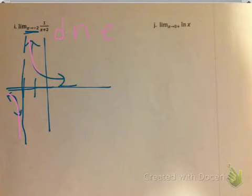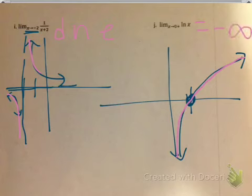Next: natural log of x again, but looking at the limit as x approaches 0 from the right. From the right, as x approaches 0, the answer is still negative infinity. It really only has a limit from the right side, and that's no different than the limit as x approaches 0 from the right, because there's no graph to the left of 0.